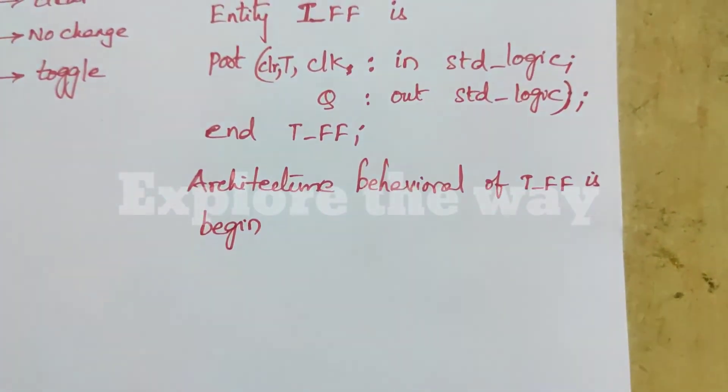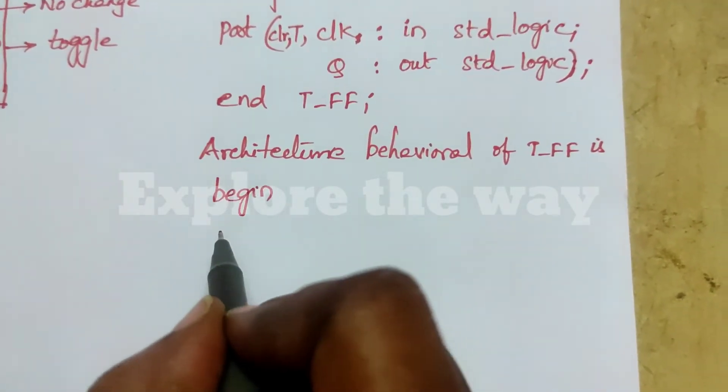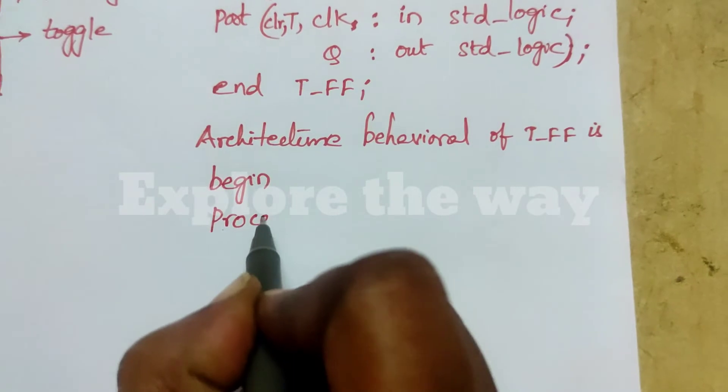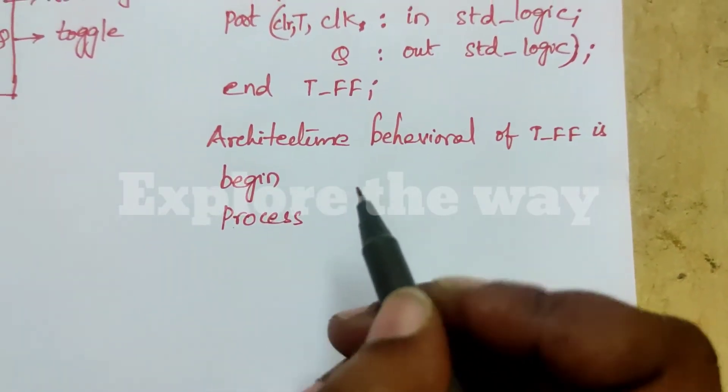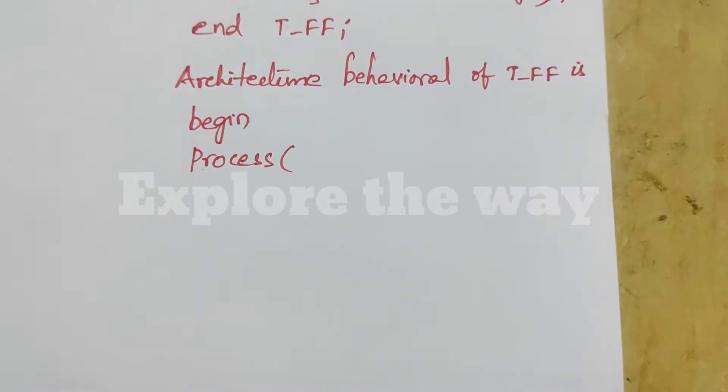The fundamental building block in behavioral style is process statement. So, you should describe the behavior within the process statement. So, write process. You need to write the sensitivity list.